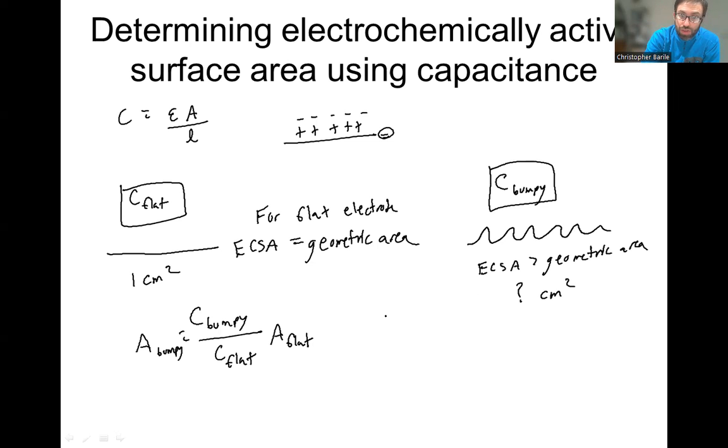And we know that C equals basically the scan rate nu times the current. So this is capacitance C, this is scan rate, and this is current.